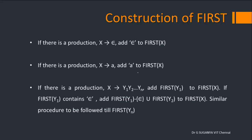Let's look at the construction of FIRST — just map what we discussed. If there is a production X gives epsilon, add epsilon to FIRST of X. What does it mean? No bookings for today — the doctor is free. So the bookings are equal to epsilon. Now there is a production X gives 'a', where 'a' is a terminal.